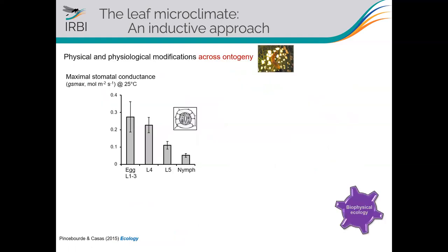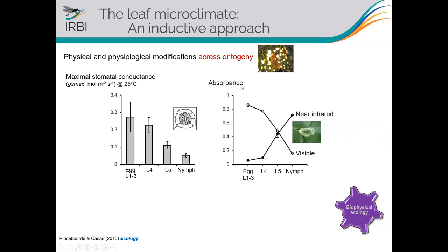We measured these properties across the entire ontogeny of the leaf miner. Eggs and the first three larval stages do not influence stomatal behavior — maximum stomatal conductance is essentially equal to intact tissues — and it decreases gradually across ontogeny. Similarly, absorbance in the visible range decreases gradually and near-infrared absorbance increases gradually across ontogeny up to the pupal stage.